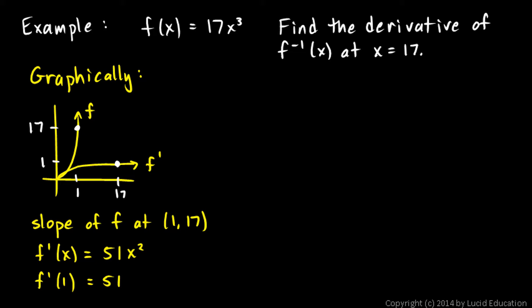So what we just did, we found the slope right there. It's pretty steep right there at that point. Okay, now, here's the reasoning. If the slope right here is 51, then the slope of the inverse function right there is 1 over 51. And we're done. That's our answer.